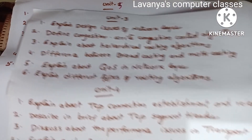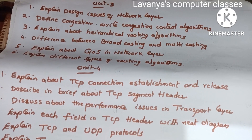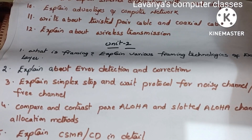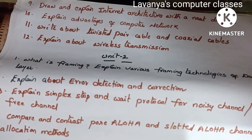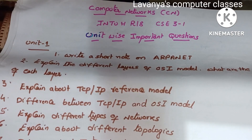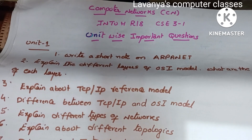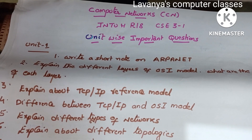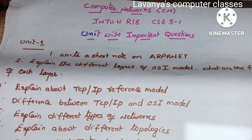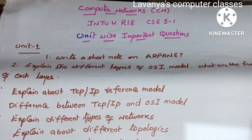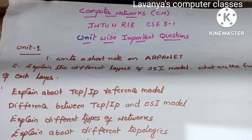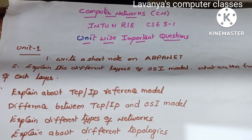Take notes for all the units and read all the questions without leaving any. If you read all the questions, you will easily be able to attempt all five questions in the exam. I have already uploaded Computer Software Engineering and PPL important questions — all are in the CSE 31 playlist. Open the playlist and read all the questions along with old question papers. All the best for your exams! If you like this video, please subscribe to my channel and share it with your friends.